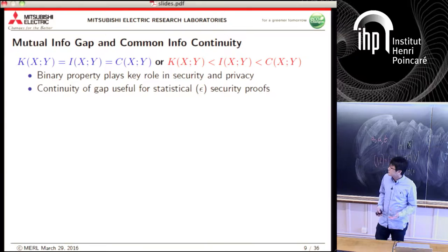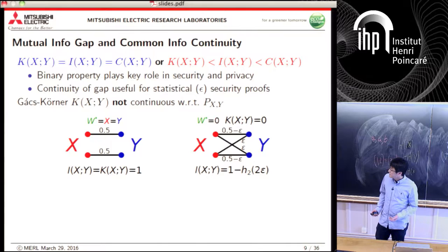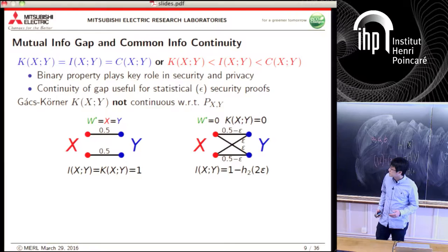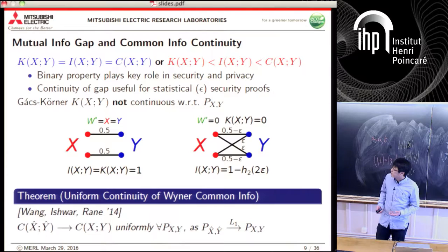For epsilon-security proofs, continuity of the gap is useful. However, Gács-Körner common info is not continuous with respect to the joint distribution of X and Y — you can change the distribution just slightly by adding an epsilon edge, and Gács-Körner common info can jump discretely, going from one to zero. On the other hand, Wyner common info is continuous — and in fact uniformly continuous — with respect to the joint distribution, making it quite useful for statistical security proofs.